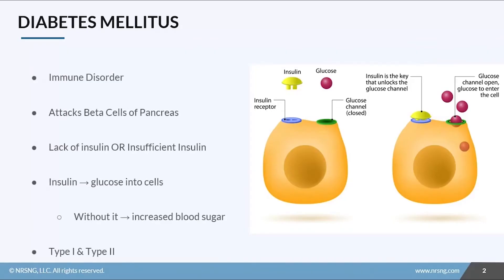Let's look at basic pathophysiology. Diabetes is an immune disorder that attacks the beta cells of the pancreas — those are the cells responsible for secreting insulin. So if the beta cells are attacked, we either have a lack of insulin or an insufficient supply of insulin for our body's needs.